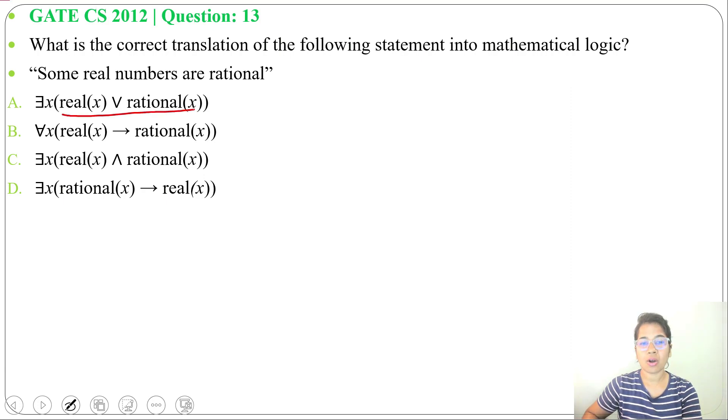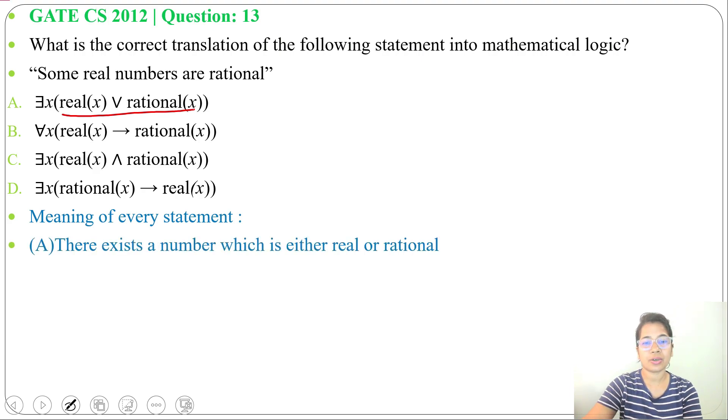So option A is not the answer. Next, option B: for all x, real(x) → rational(x). So if a number is real, then it's rational. This is false; some real numbers are rational, not all.